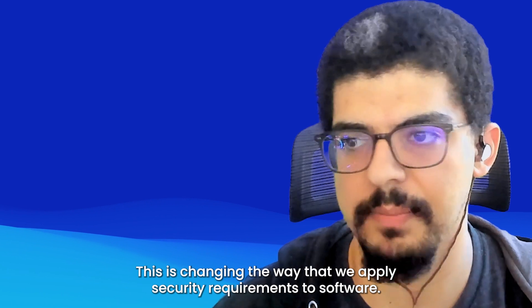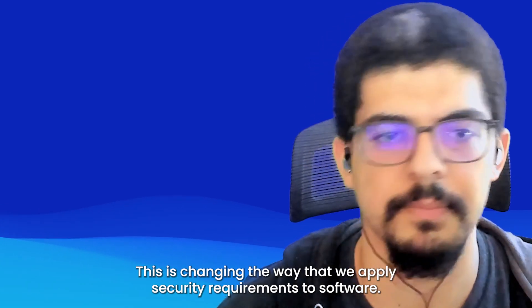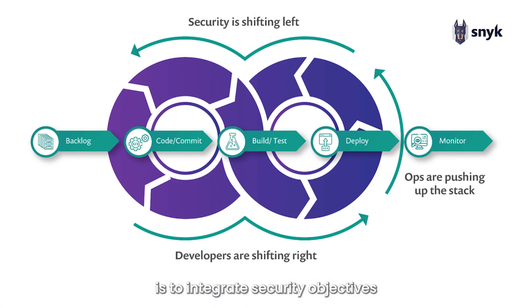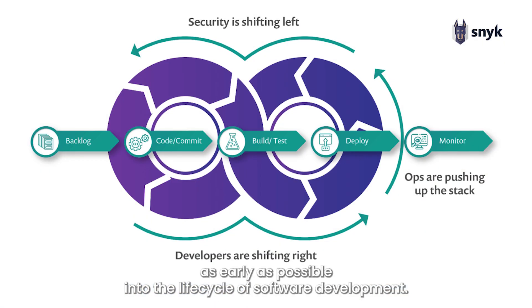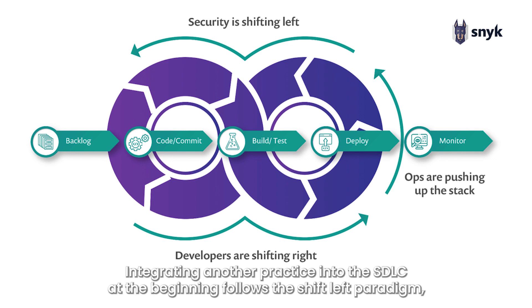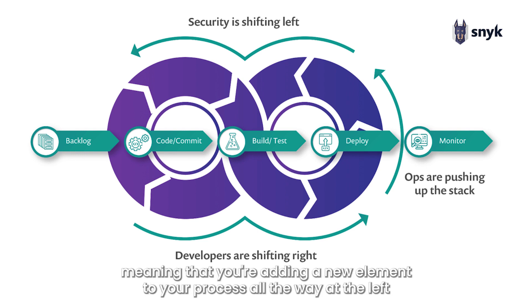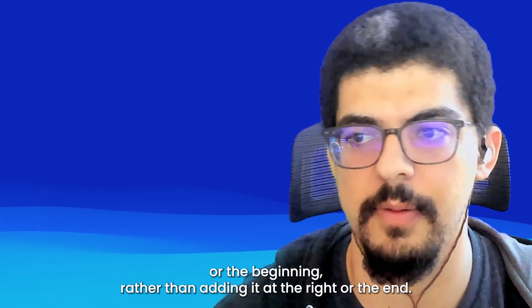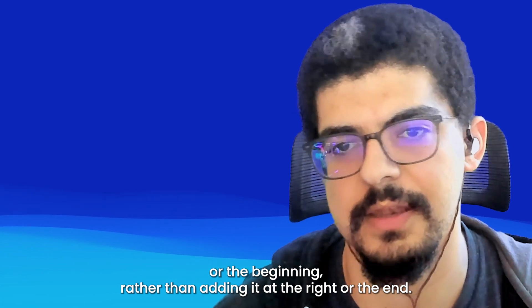This is changing the way that we apply security requirements to software. The definition of DevSecOps is to integrate security objectives as early as possible into the lifecycle of software development. Integrating another practice into the SDLC at the beginning follows the shift-left paradigm, meaning that you're adding a new element to your process all the way at the left or the beginning, rather than adding it at the right or the end.